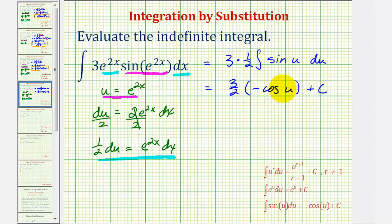Since u equals e to the 2x, we have negative three-halves cosine e to the 2x plus C. This is our anti-derivative using u-substitution. I hope you found this helpful.